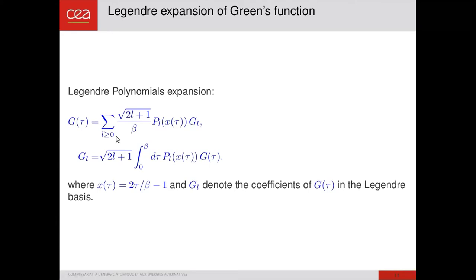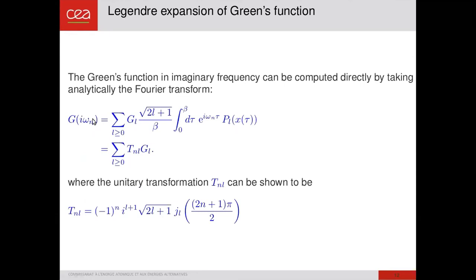And of course, if L is infinite, both representations are equal. But it has been shown that for a large value of L, the noise of the Green function coming from quantum Monte Carlo is gathered in the large values of G_l, which are smaller and smaller. So we can neglect them and recompute from the G_l the Green function in imaginary time or in imaginary frequency with this formula. And in this case, the Fourier transform from time to frequency is done analytically using the analytical expression of the Green function as a function of Legendre polynomial.